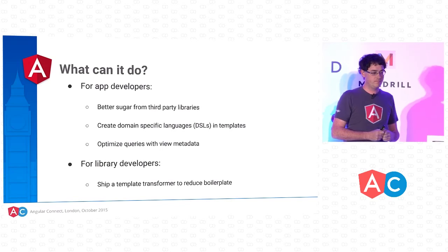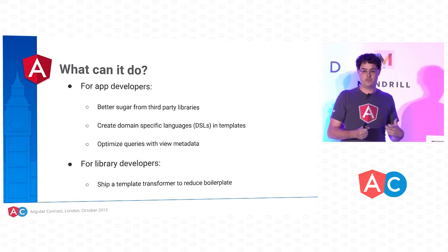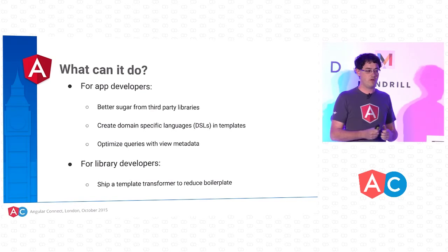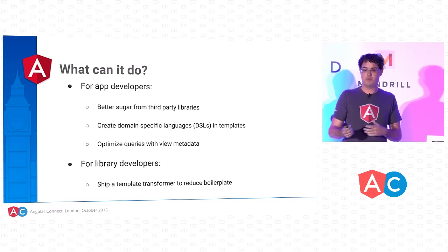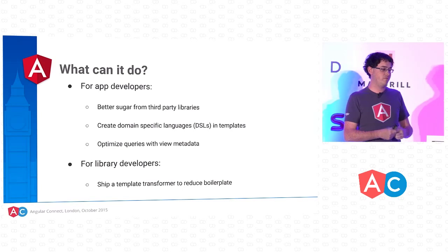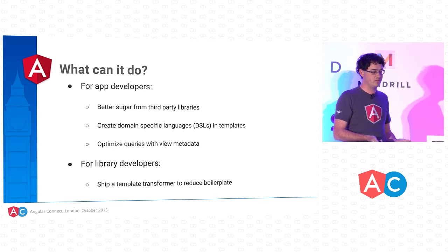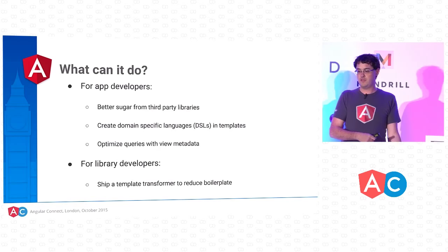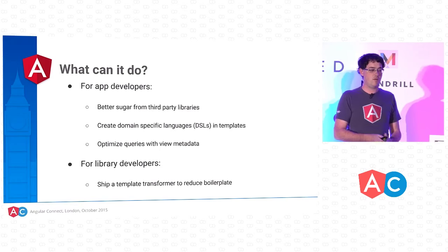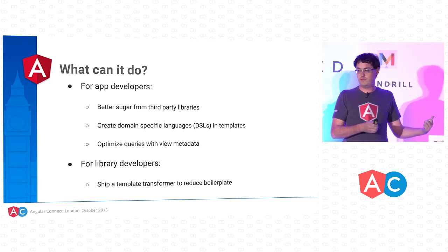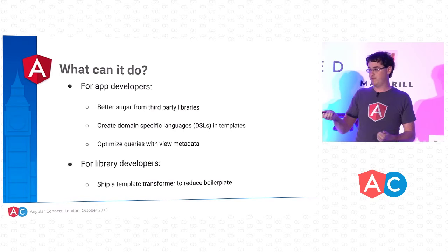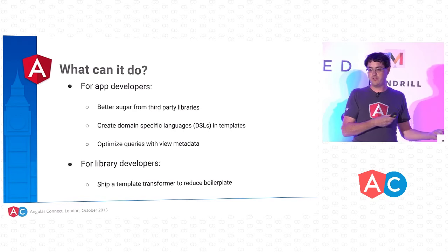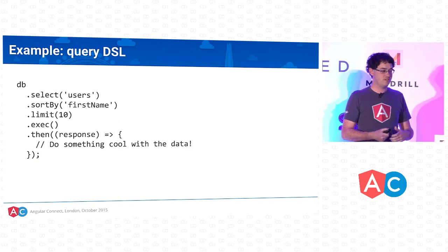What does this mean for you? As developers, you'll enjoy better sugar and cleaner integrations with third-party libraries if they ship a transformer. You can also write a transformer yourself — for example, to create domain-specific languages in your templates or to take advantage of information in templates to optimize data operations. And if you develop third-party libraries, we'd really like you to ship template transformers with them.